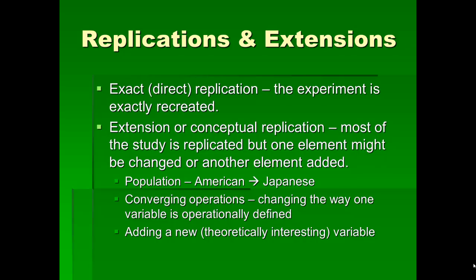You could also create an extension based on converging operations — that is, when you change the way one variable is operationally defined. For instance, I chose Dragon Ball Z as my operational definition of violent cartoons, but you could operationalize that variable in many different ways. Depending on the operation you use, that could be a very theoretically interesting extension. Another way to develop an extension is by adding a new theoretically interesting variable that would create more knowledge or understanding of the phenomenon.